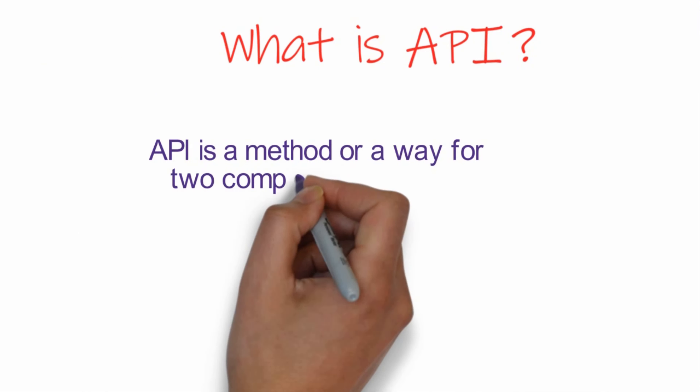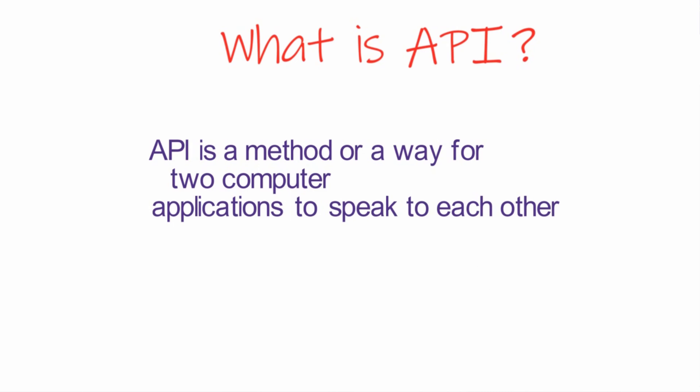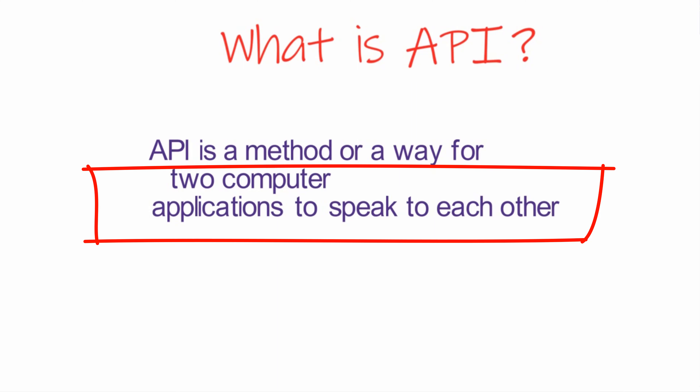To generalize: an API, or Application Programming Interface, is a method or a way for two computer applications to speak to each other. We need APIs to allow computer applications to communicate and to share data from one computer to another.